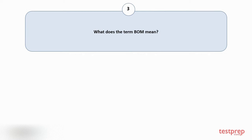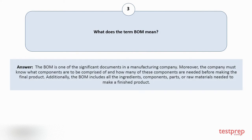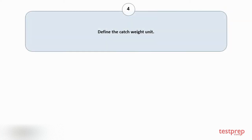Question number 3: What does the term BOM mean? The BOM is one of the significant documents in a manufacturing company. Moreover, the company must know what components are to be comprised of and how many of these components are needed before making the final product. Additionally, the BOM includes all the ingredients, components, parts, or raw materials needed to make a finished product.